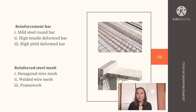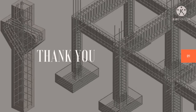Then there is Type B, which is reinforced steel mesh. This consists of hexagonal wire mesh, welded wire mesh, and also framework. That is all for my presentation today. Thank you for watching.